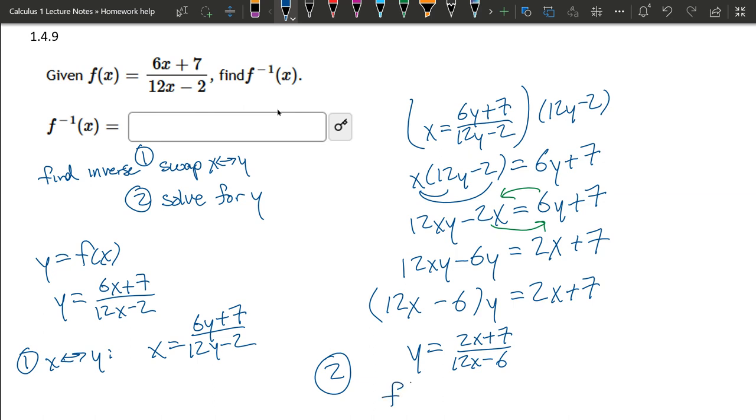And what you're looking at is f inverse of x. So you are done right here: 2x plus 7 divided by 12x minus 6. That is the inverse of the original function.